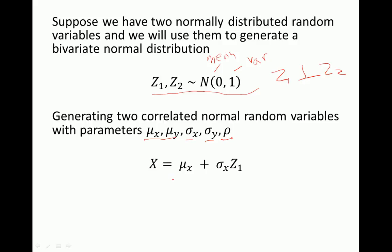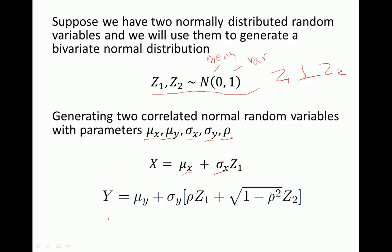We construct X by using Z1, where mu_x and sigma_x are just some numbers. And we construct Y by using both Z1 and Z2. You can see that both X and Y depend on Z1, and that's a way to make them correlated. In constructing Y we're using parameters mu_y, sigma_y, and rho, which is the coefficient of correlation between X and Y — and these are just some numbers that we select.